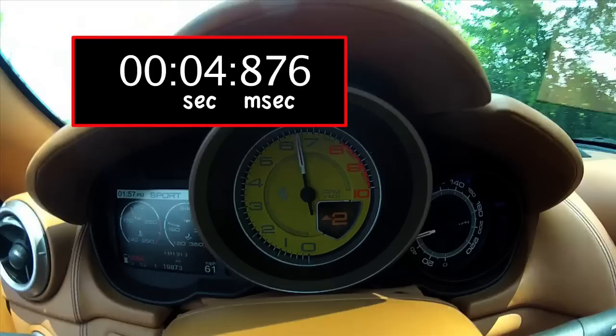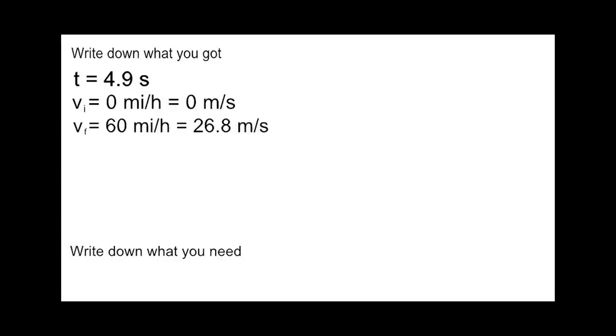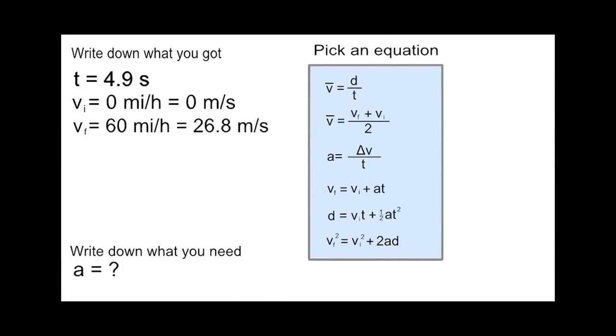So to solve the problem, we have to write down what we got: the time is 4.9 seconds, the initial velocity is 0 miles per hour or 0 meters per second since it started from rest, and the final velocity is 60 miles per hour or 26.8 meters per second. What are we looking for? Write down what you need: the acceleration is our unknown. So now we have to pick an equation.